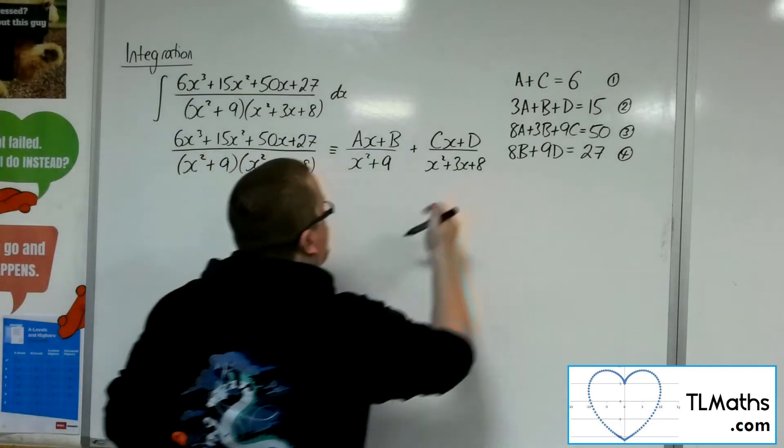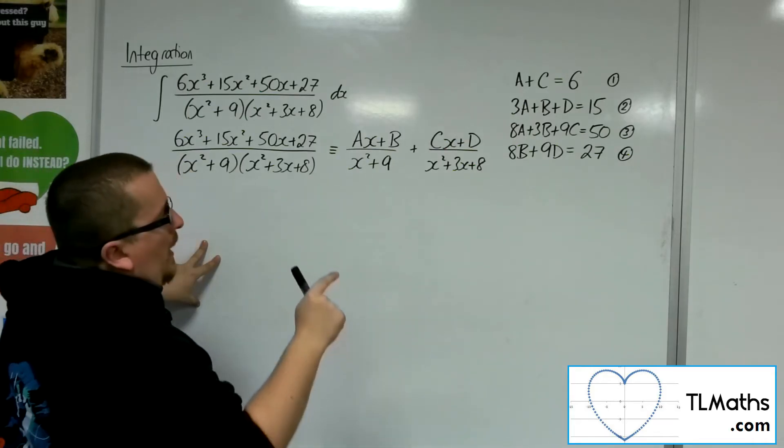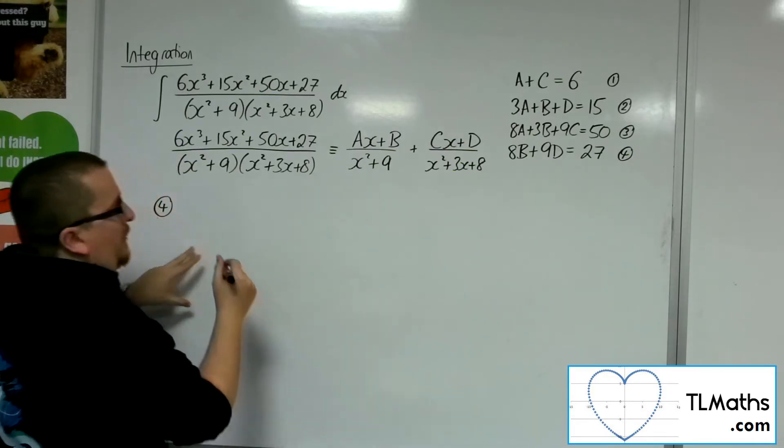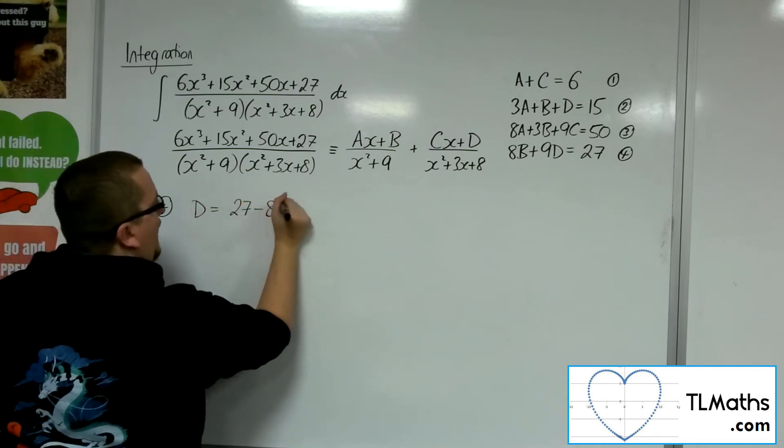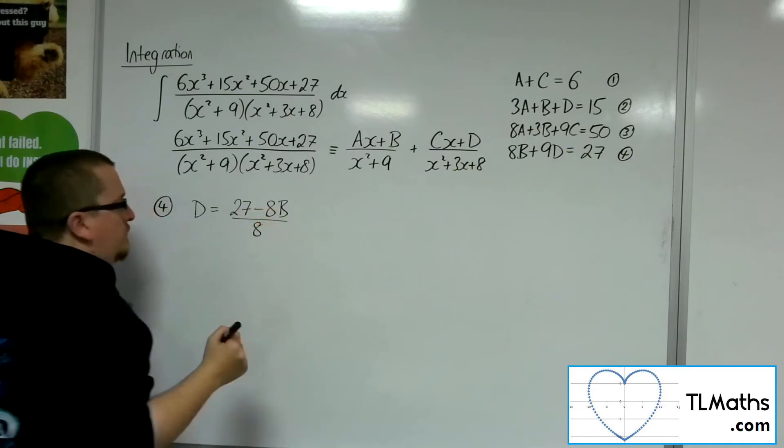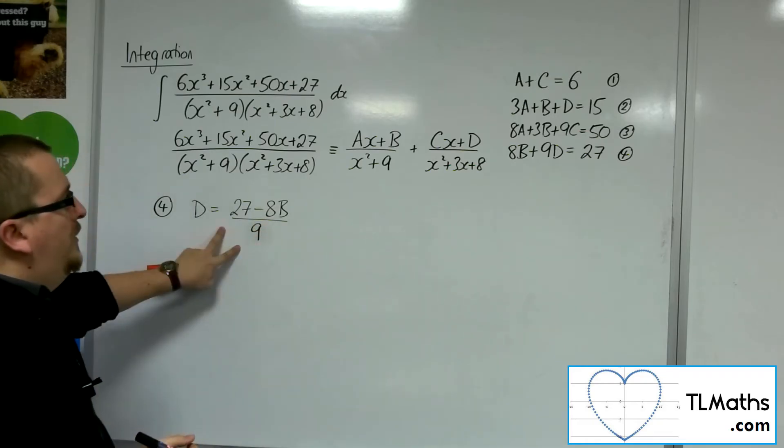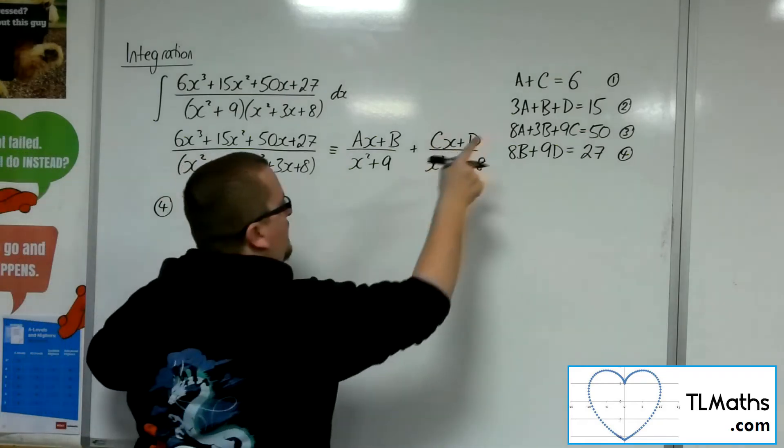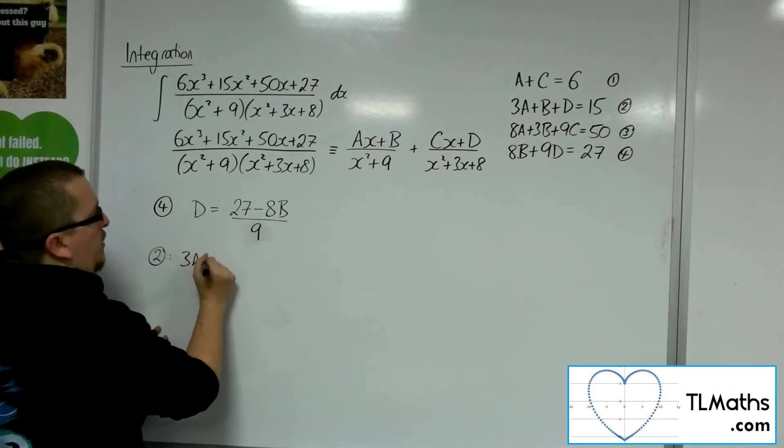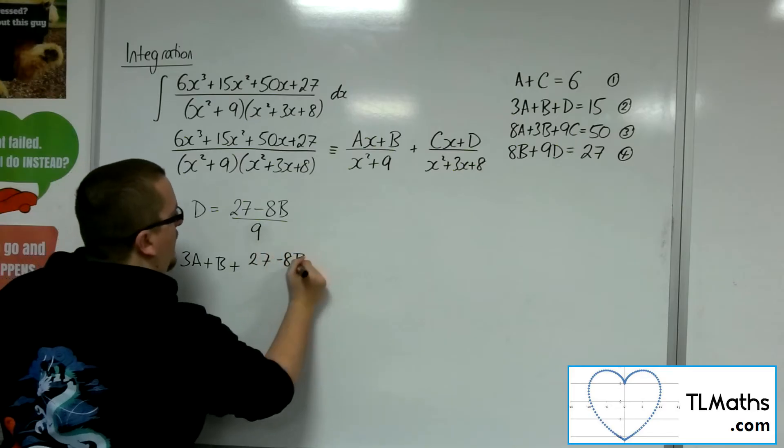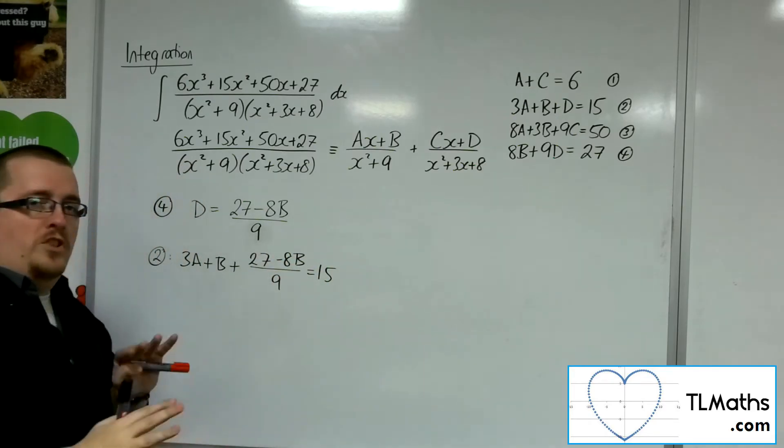So I'm going to rearrange number 4 to get the d by itself. So d would be 27 minus 8b over 9. So that's the d. If I substitute that into number 2, then I've got 3a plus b plus 27 minus 8b over 9 is equal to 15. So I've now got an equation with just a's and b's in it.